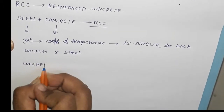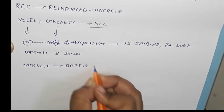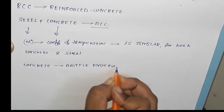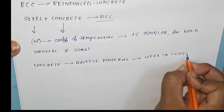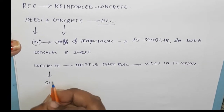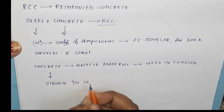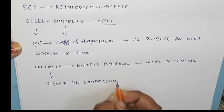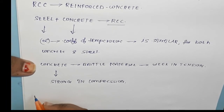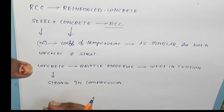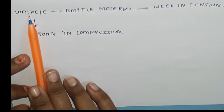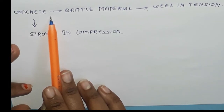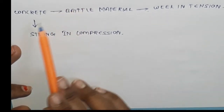Concrete is a brittle material and it is weak in tension, but it is strong in compression. So we have to increase the tensile strength of concrete by the addition of steel. Concrete is strong in compression, and to increase its tensile strength we induce steel. Moreover, steel has more tensile strength because it can elongate — since it has more elongation capacity, we induce only steel.